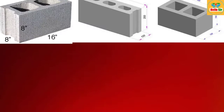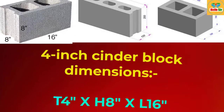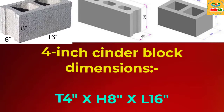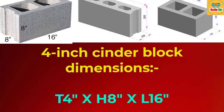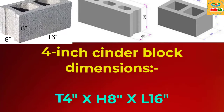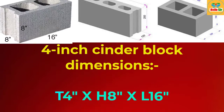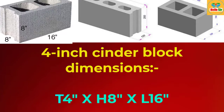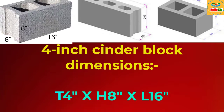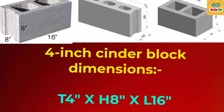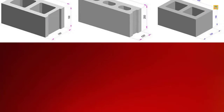4-inch cinder block dimension: The nominal dimension of a 4-inch full cinder block is 16 inches long by 8 inches high by 4 inches wide. Thank you.